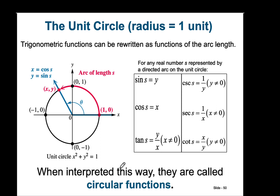When interpreted this way, we call the trigonometric functions circular functions, which makes sense — we're talking about arc lengths, which are pieces of the circle.